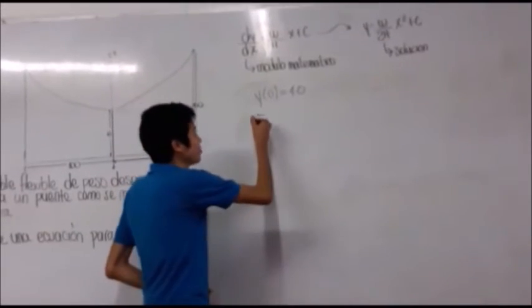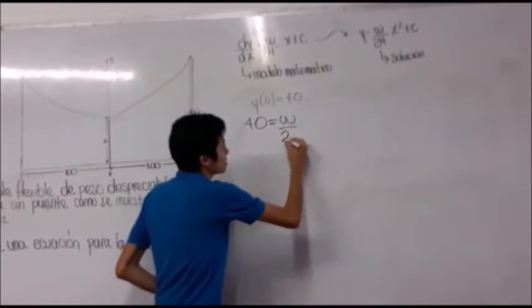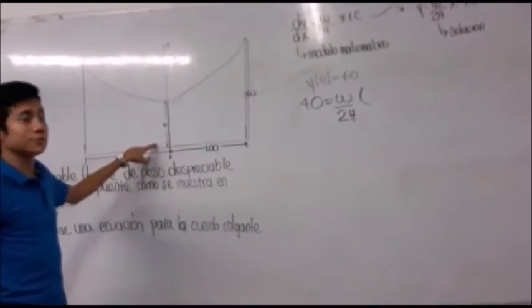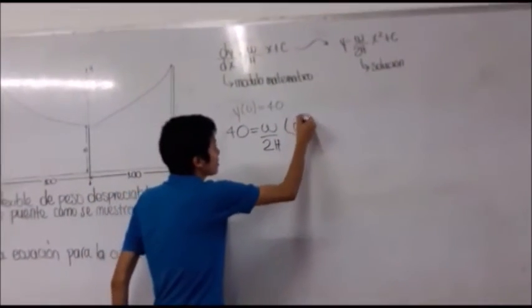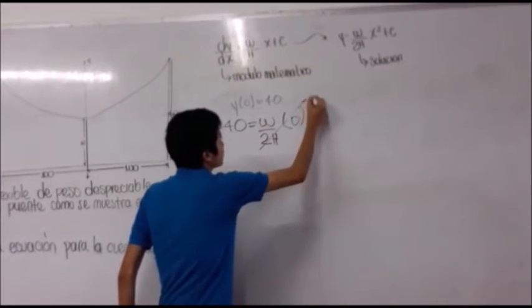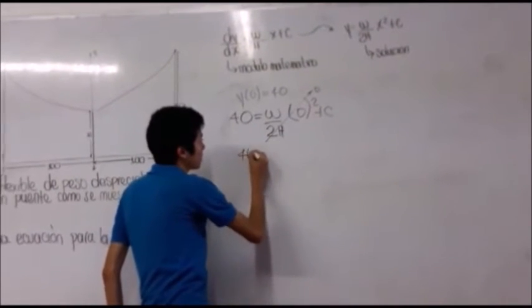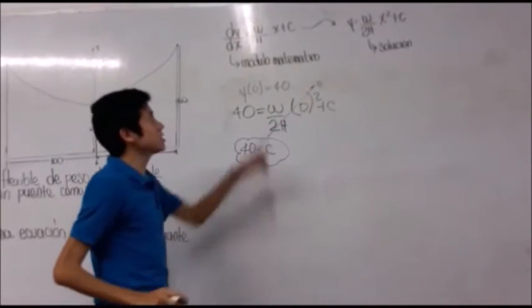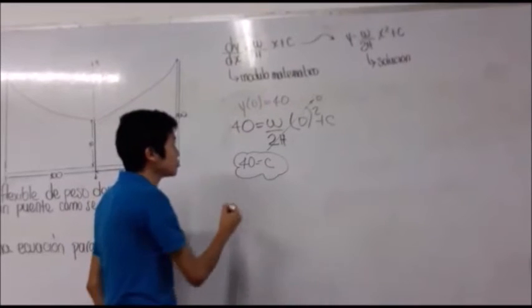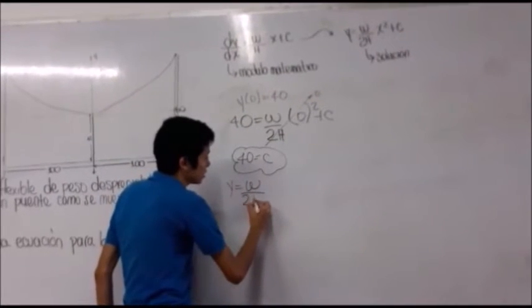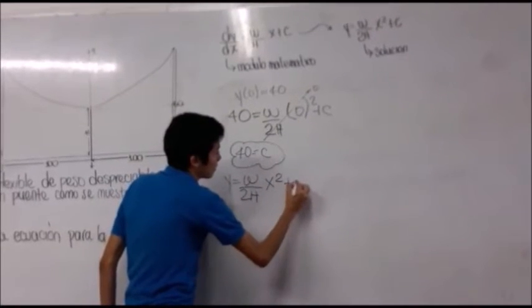En relación con nuestra solución, tenemos 40 sobre W, 2H, que multiplica el valor de X. El valor de X sería 0, tenemos 0 al cuadrado más C, todo esto nos da 0. Tenemos 40 que es el valor de la constante. Presentamos la solución final: y es igual a W sobre 2H por x al cuadrado más 40.